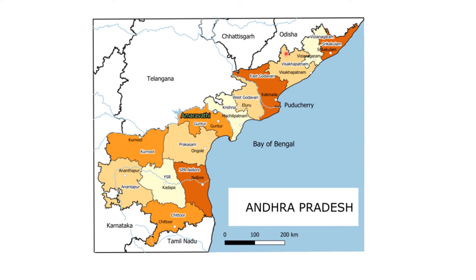In the old Andhra Pradesh map, the districts sharing a border with Orissa were: Srikakulam, Vijayanagaram, Vishakhapatnam, and East Godavari — four districts shared a border with Orissa. West Godavari is not bordering Orissa, only East Godavari is. Chhattisgarh borders East Godavari district, and East Godavari district also borders Telangana.